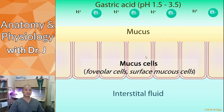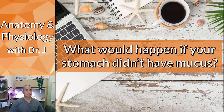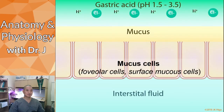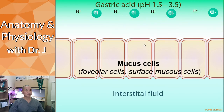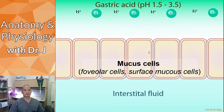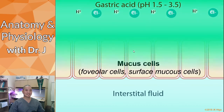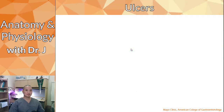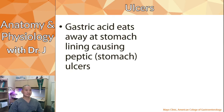Mucus in the stomach is more than just a slimy substance — it's a critical protective layer. Without it, the gastric acid would attack the inner lining of your stomach. This is how ulcers form: gastric acid eats away at the stomach lining, causing what we call peptic ulcers or stomach ulcers.